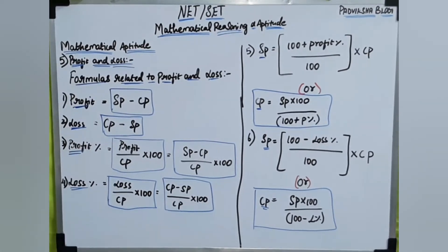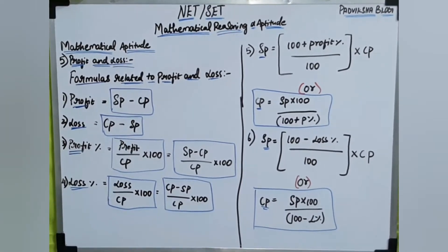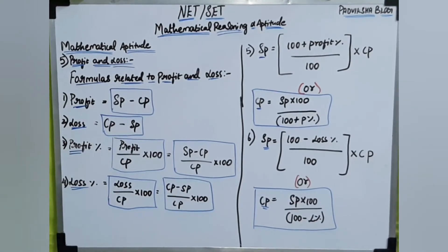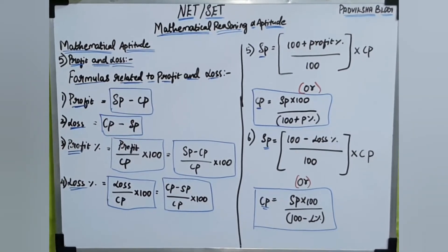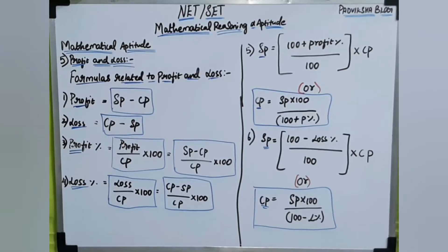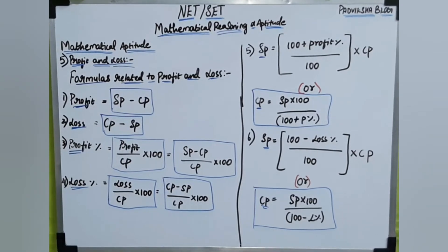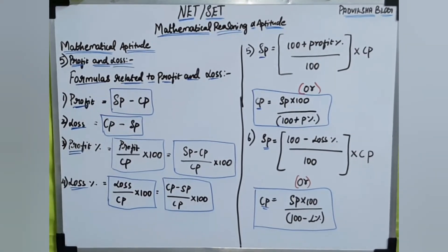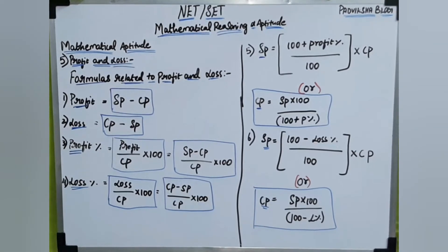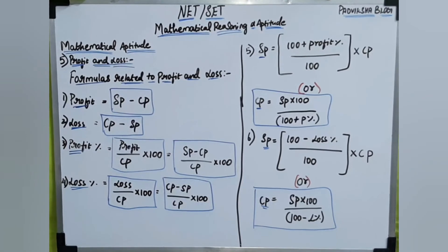The sixth formula: selling price is equal to 100 plus profit percentage — or in the case of loss, 100 minus loss percentage — divided by 100, into cost price. For the loss formula, we use minus. Loss percentage equals loss divided by cost price into 100, which is cost price minus selling price divided by cost price into 100.